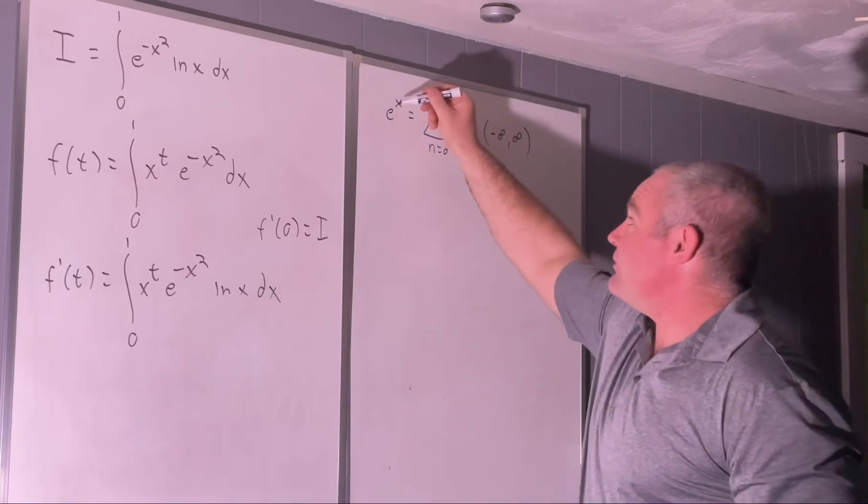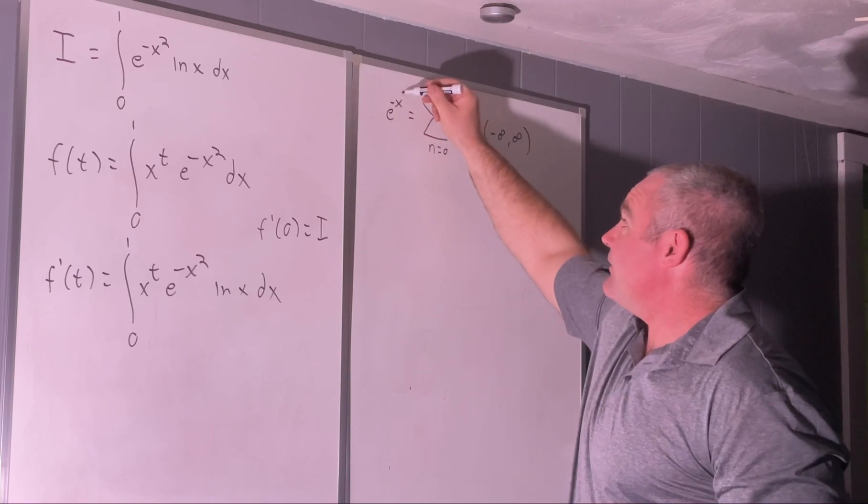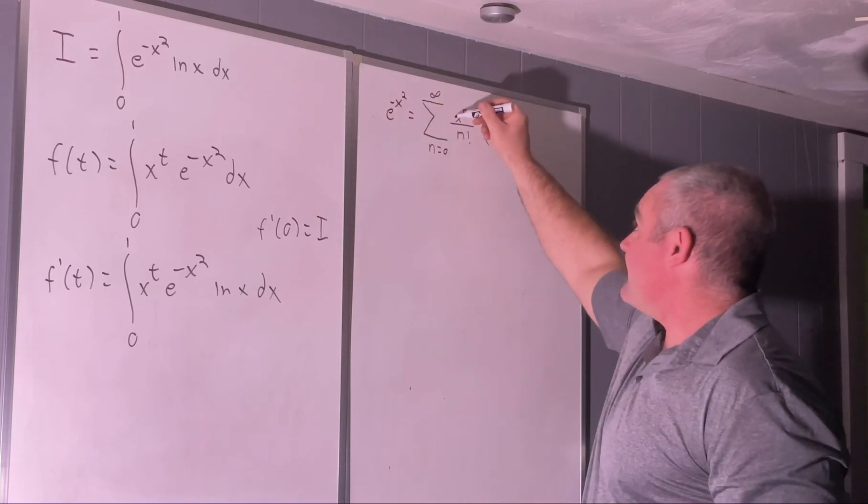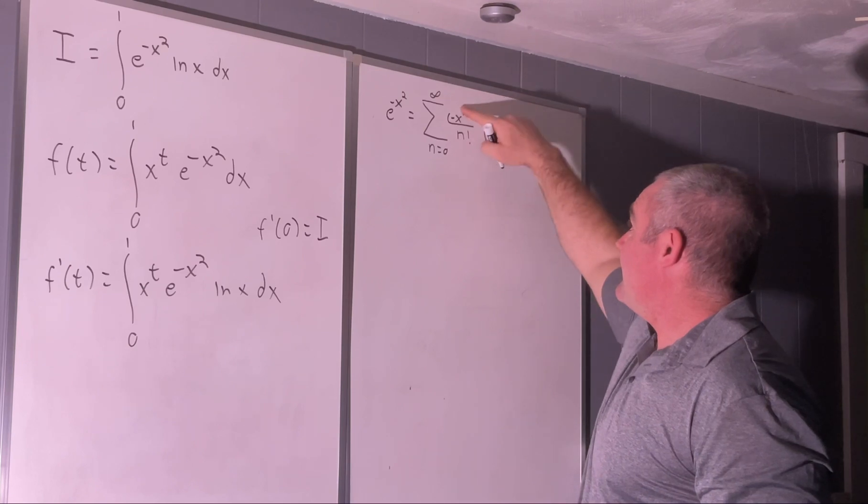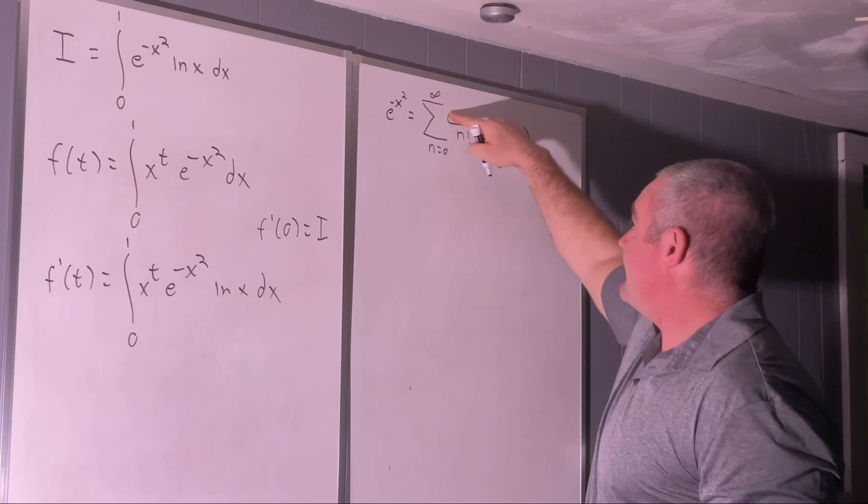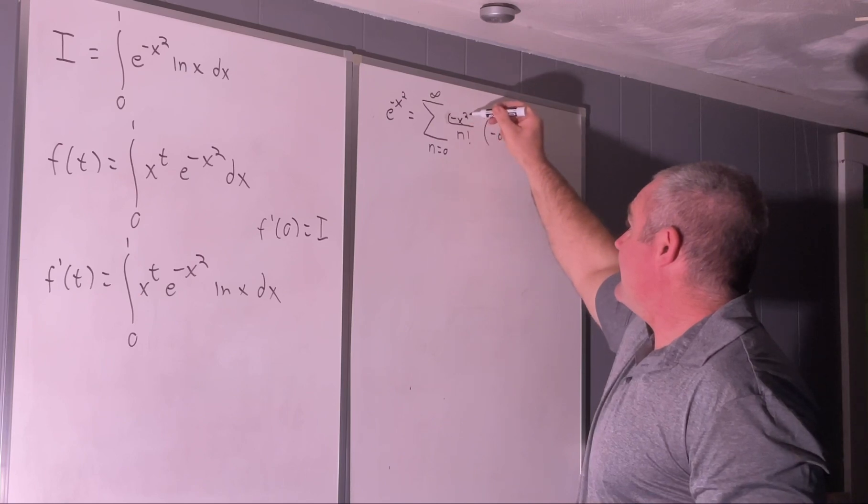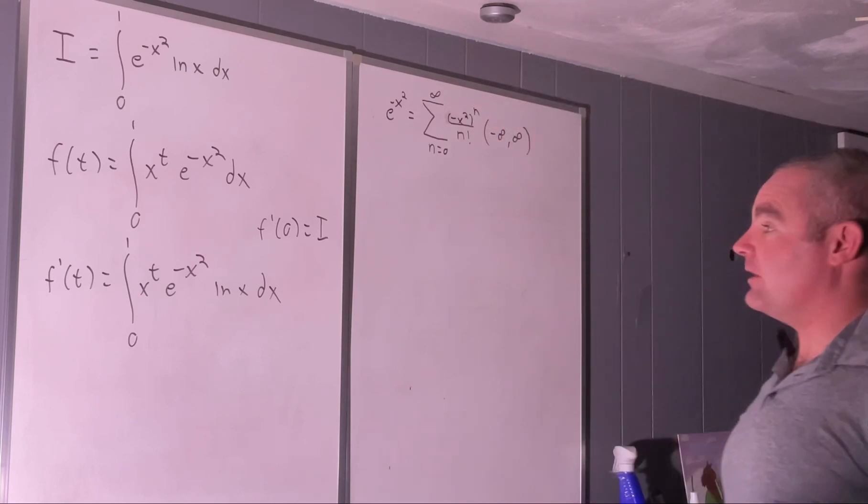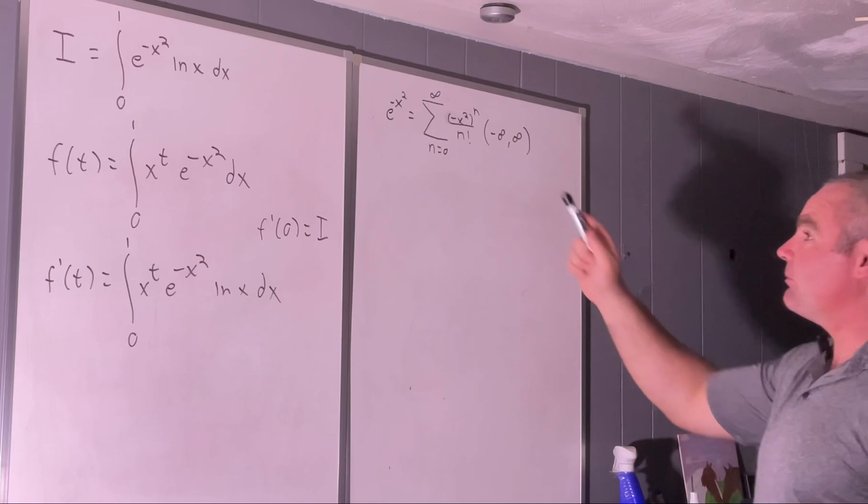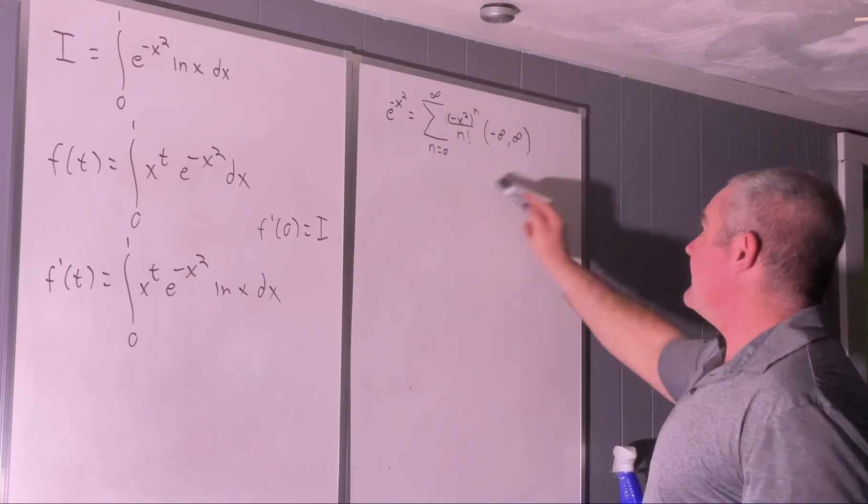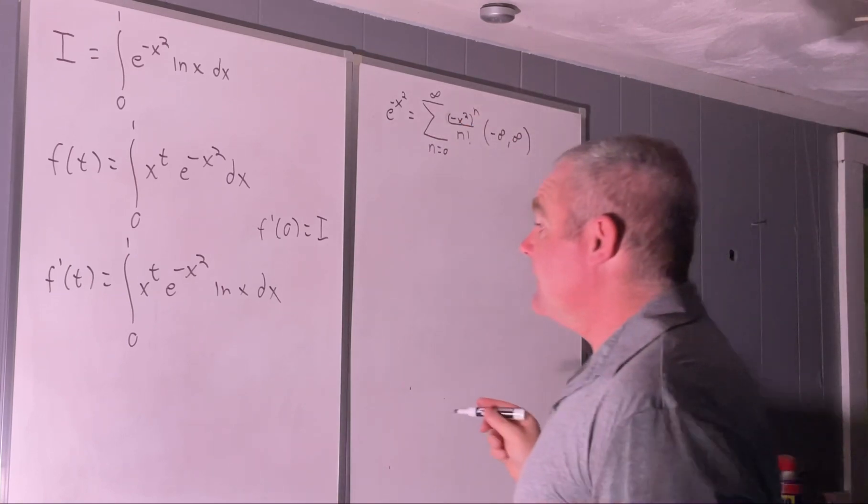Except we're going to be using it on e to the negative x squared. But that's pretty easy. All you need to do is just put a negative and a squared and then a negative like this. So, we'll be replacing our e to the negative x squared with this.